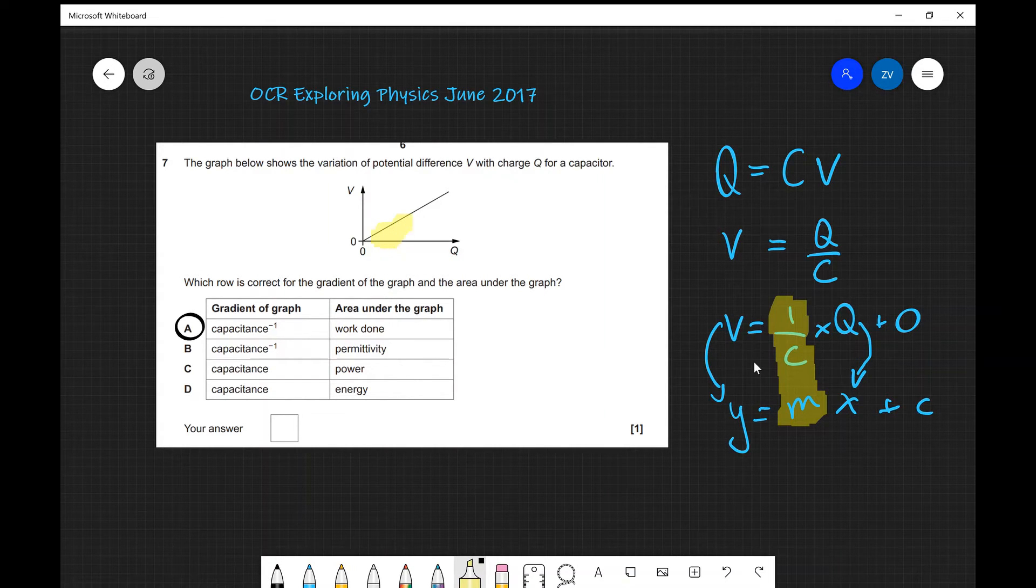And the reason for that is because the area under the graph is the energy. However, remember energy and work done, well, they're actually exactly the same. In fact, this is why the equation is given the symbol W as well. So the work done or the energy stored is equal to the area underneath the graph. The correct answer is A.